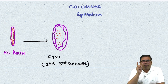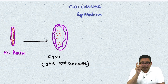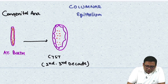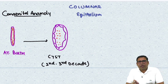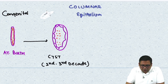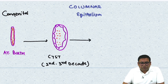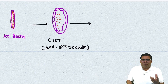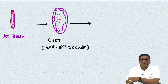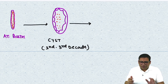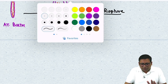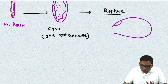Remember: the thyroglossal duct cyst is a congenital anomaly present at the time of birth, but the cystic transformation actually happens at the second or third decade of life. Now, this cyst will keep on enlarging — think of it like a balloon — and rupture is inevitable. It will rupture either spontaneously or through an iatrogenic cause.